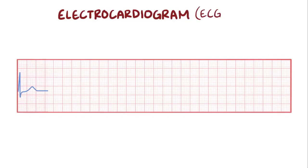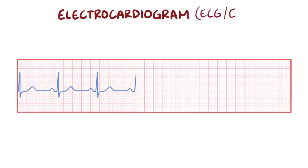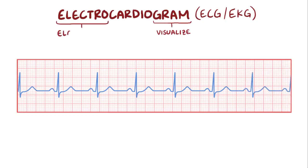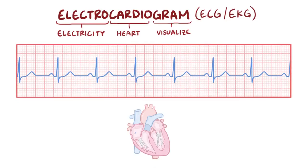An electrocardiogram, or ECG, or the Dutch or German version of the word EKG, is a tool used to visualize the electricity that flows through the heart. An ECG tracing specifically shows how the depolarization wave moves during each heartbeat, which is a wave of positive charge.